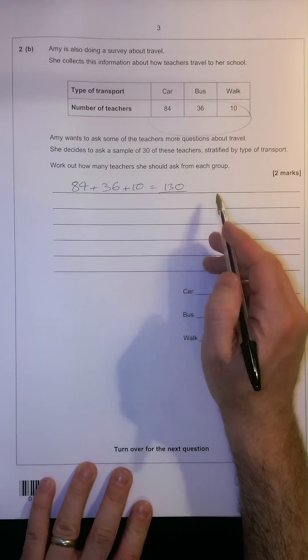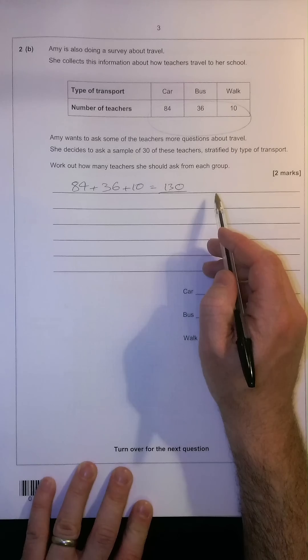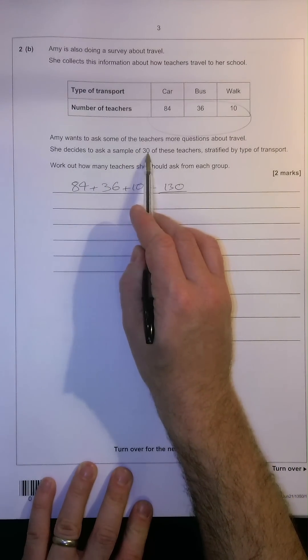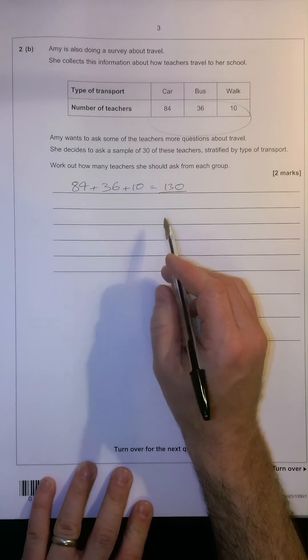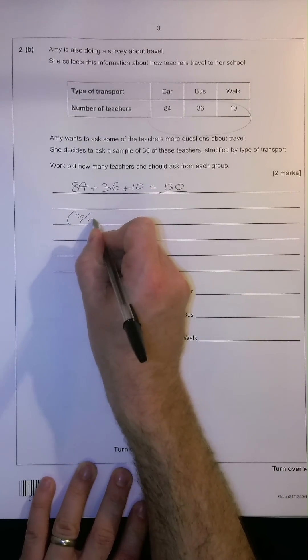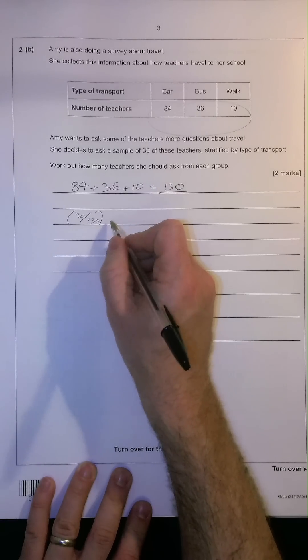And then we have to figure out exactly how many we need to ask from each group. She wants to ask just a sample of 30 out of the whole group of 130. So for each one, we'll do 30 divided by 130, and that will give us that fraction,